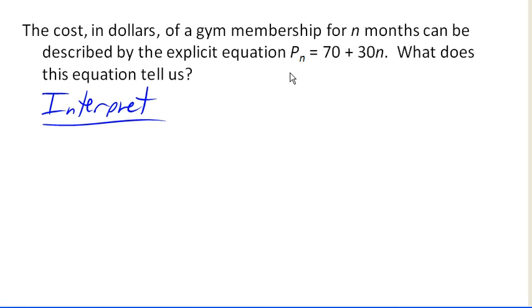What do we know about explicit equations? We know they take the form P0 plus D times n, where P0 is the initial amount, or the amount when n is 0. In this case, we can see that the P0 value is 70.